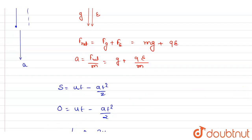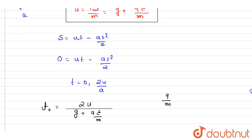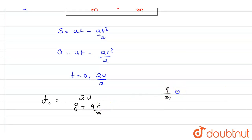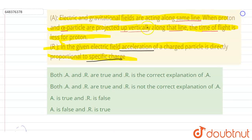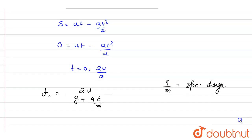Both statements are true and the reason is the correct explanation as well. Time of flight is inversely proportional to the acceleration, and acceleration is directly proportional to the specific charge. So the time of flight is inversely proportional to specific charge, and the reason is the correct explanation.